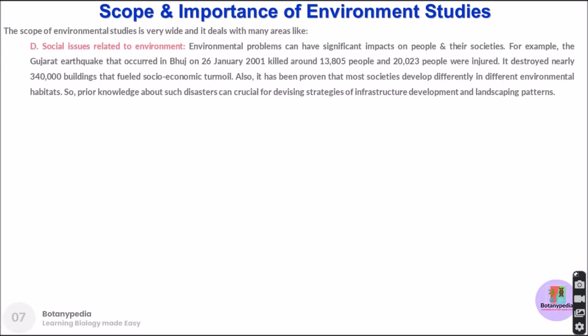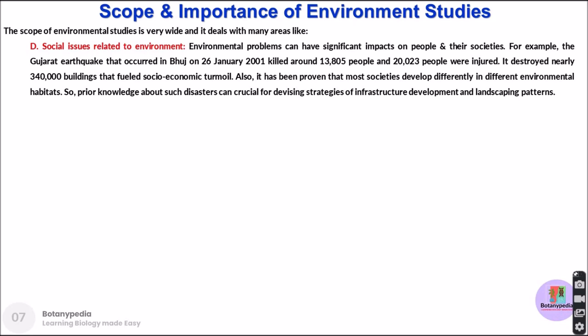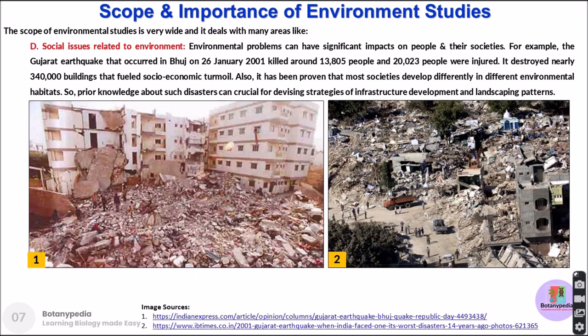Another scope of environmental studies is directly related to societies. Environmental problems can have significant impacts on people and their lives, and hence on societies. For example, the Gujarat earthquake that occurred in Bhuj on 26th January 2001 killed around 13,000 people and injured more than 20,000. It destroyed nearly 3,40,000 buildings, fueling socio-economic turmoil. It has also been proven that most societies develop differently in different environmental habitats, and prior knowledge about such disasters can be crucial for devising strategies of infrastructure development and landscaping.